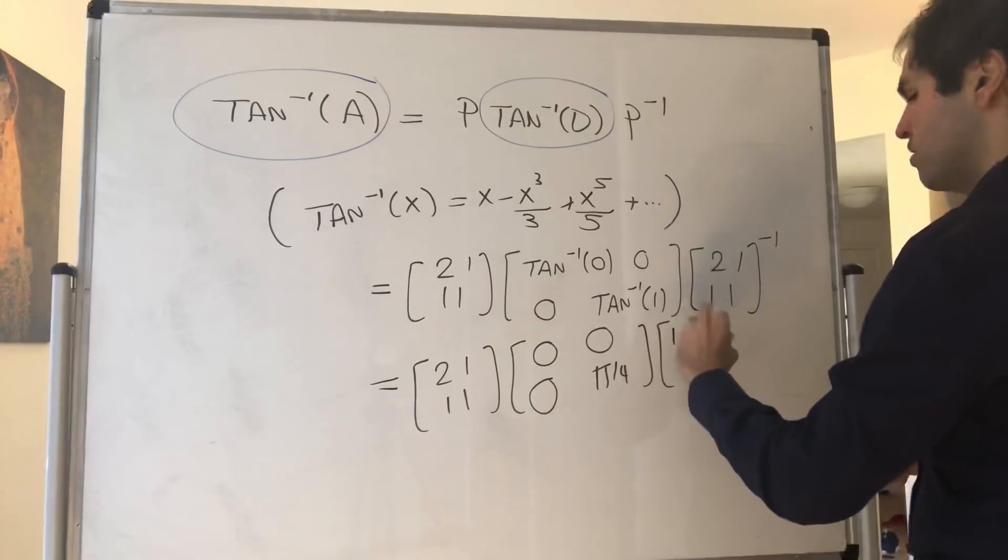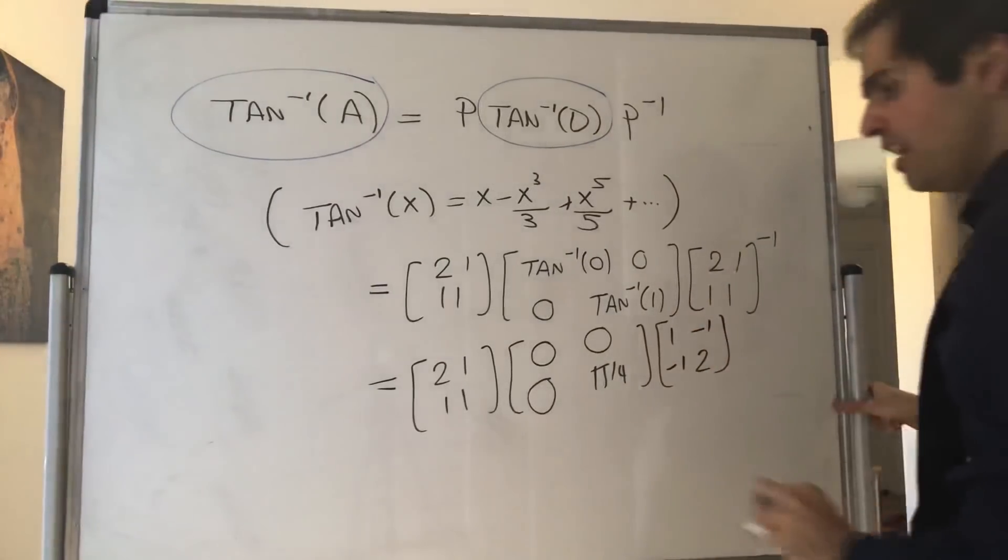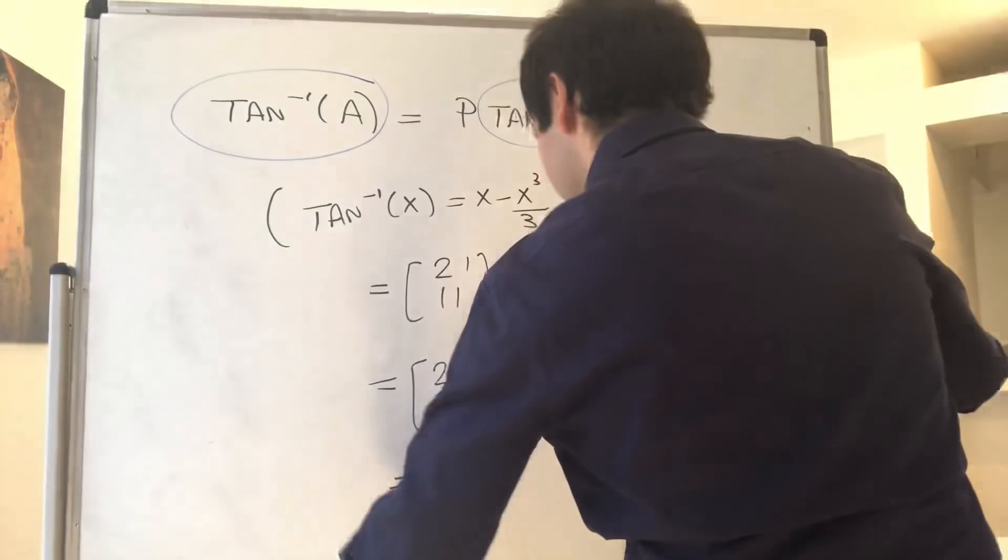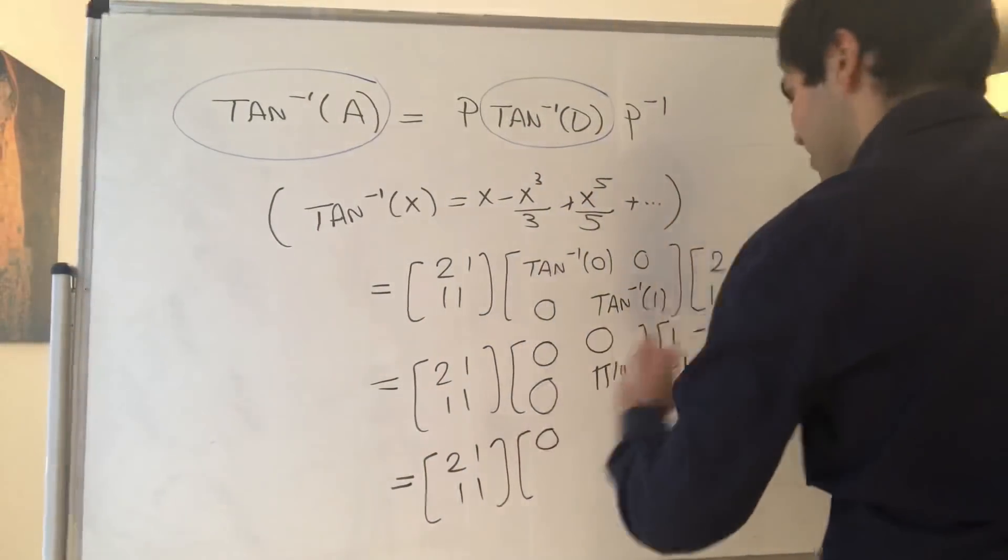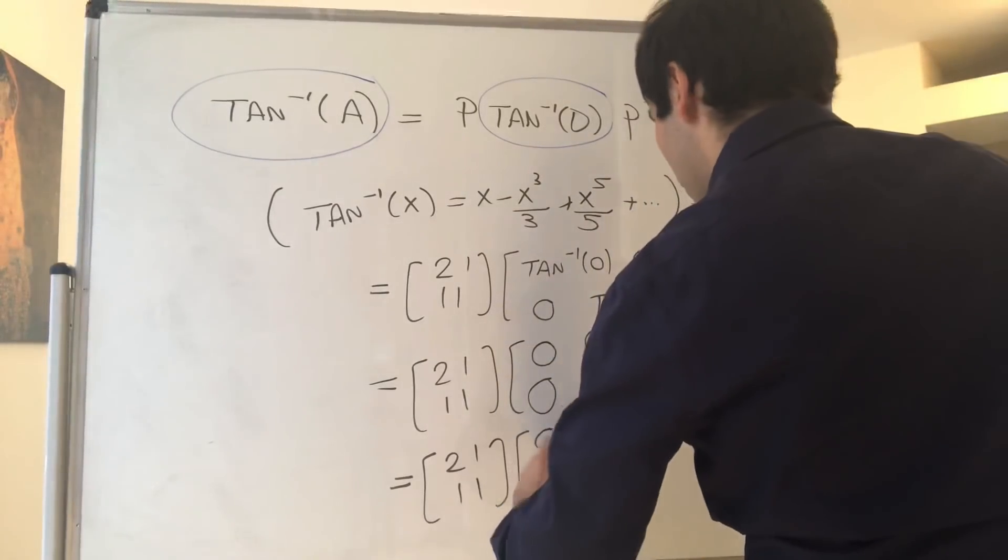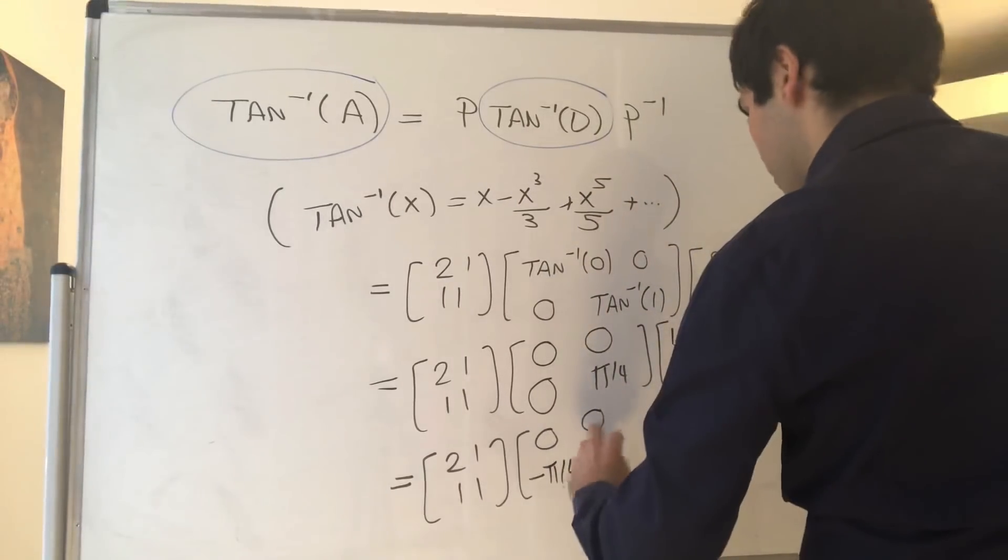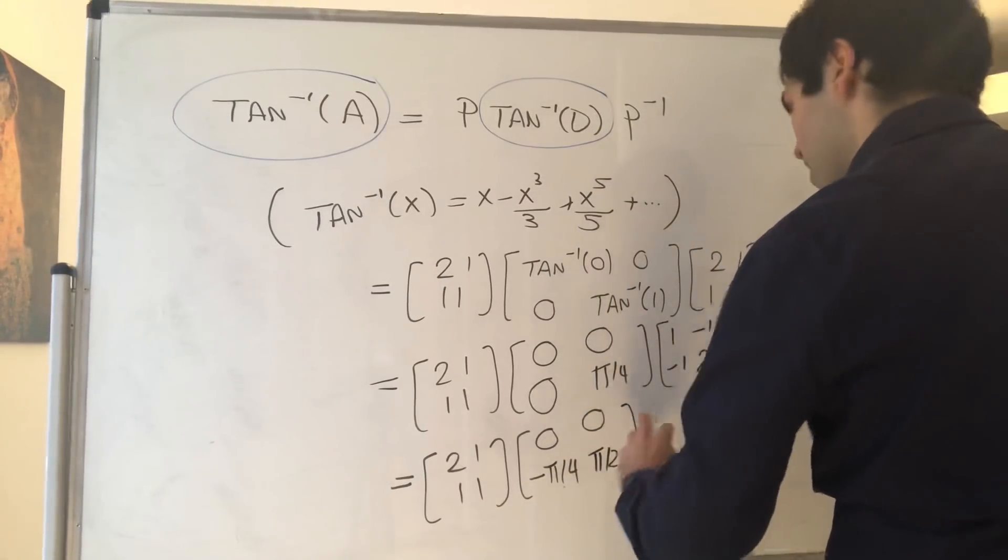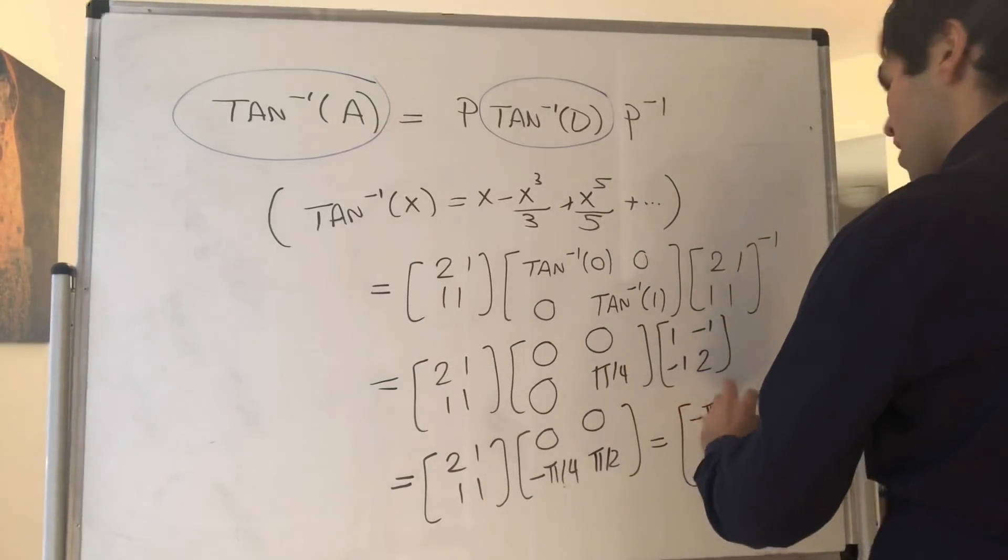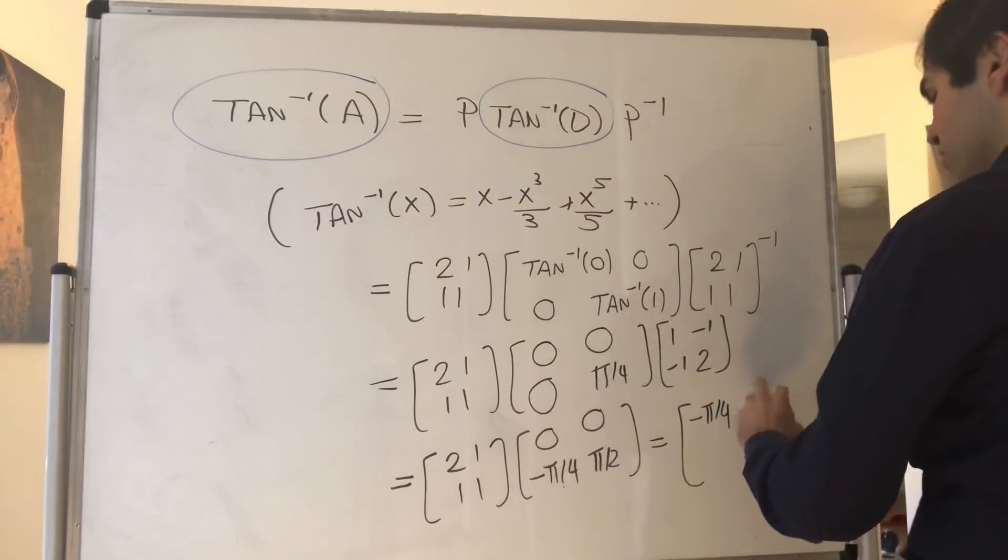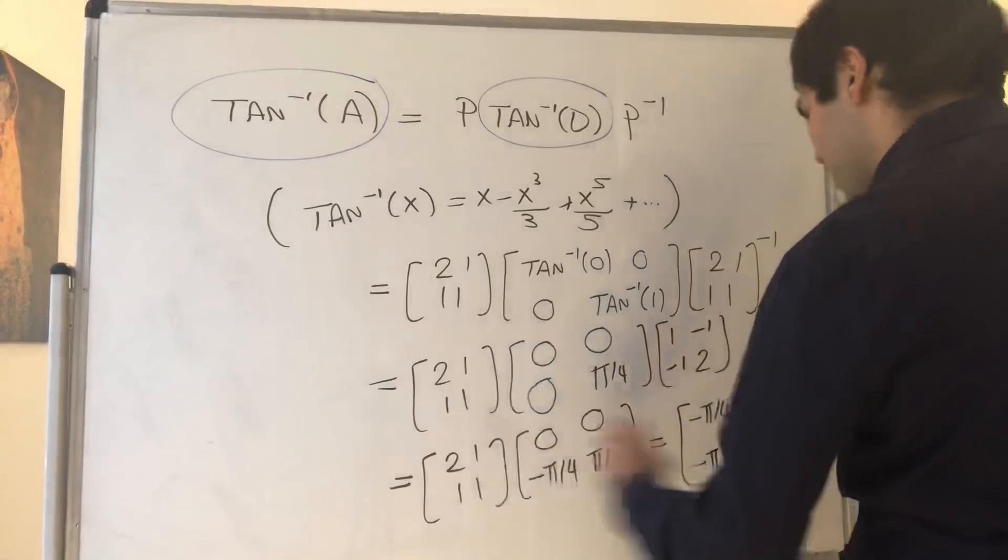And then you just calculate this. So we get [2, 1; 1, 1], okay, so 0, and then 0, and then minus pi over 4, and minus 1, so pi over 2. And last but not least, you calculate that: so minus pi over 4, and then 2, so pi over 2. And then minus pi over 4, and then pi over 2.